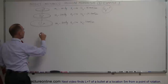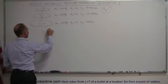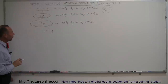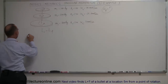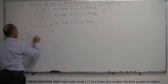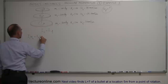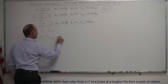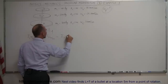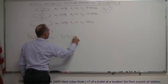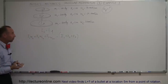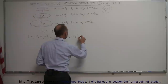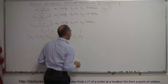Angular momentum is conserved, so we can say that L initial equals L final. We now have to calculate the initial angular momentum of each of the three disks: I1·ω1_initial + I2·ω2_initial + I3·ω3_initial must equal the sum of the moment of inertia of the three disks. Assuming they stick together after collapsing, all of them will rotate at the same angular velocity times omega final, which is what we're looking for.